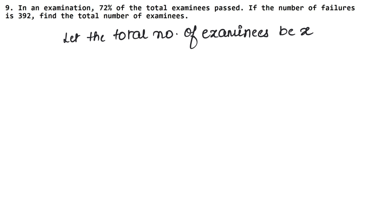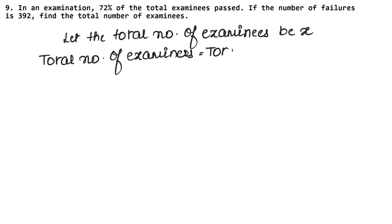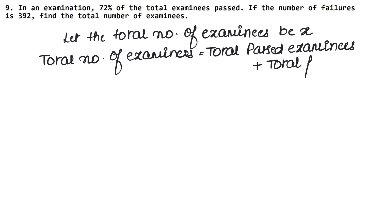X is the total number of examinees. Now it says 72% passed and failures are 392. So how is the total number of examinees formed? Total examinees = those who passed + those who failed. Total number of examinees was assumed to be X, so we write X equals.